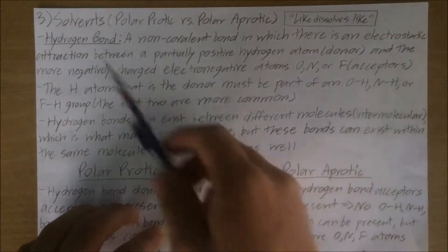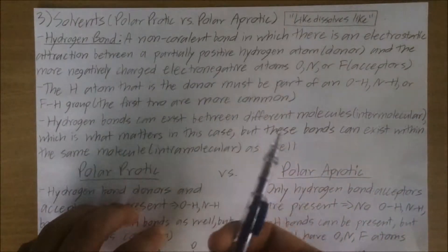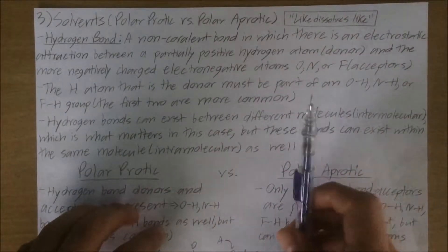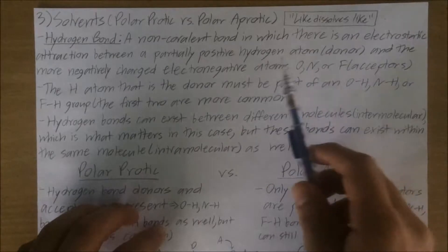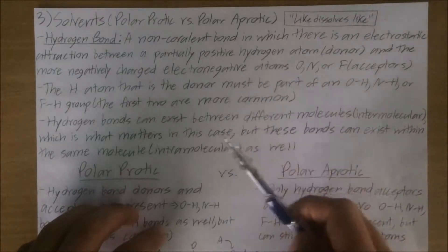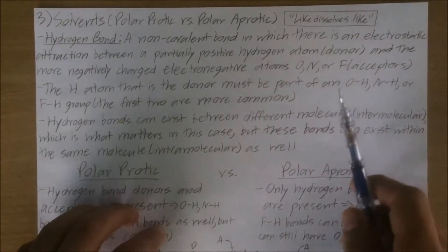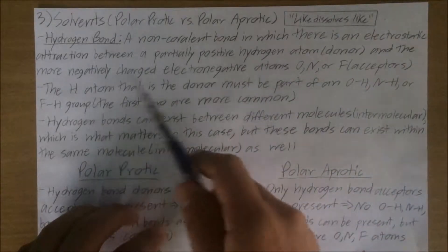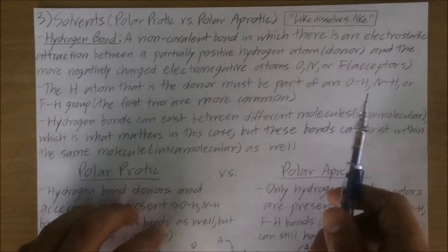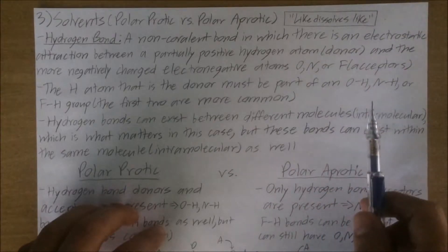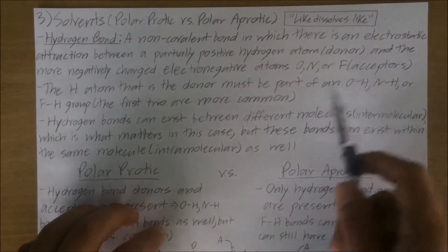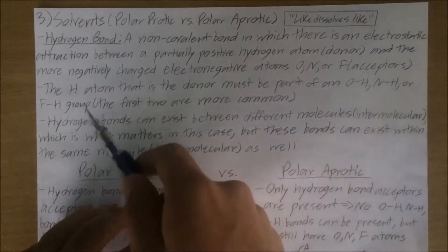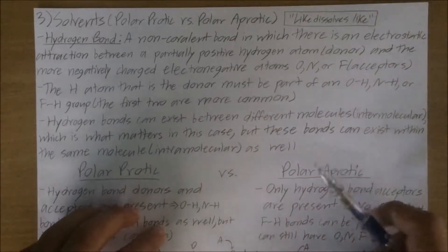Another rule to take into account for hydrogen bonding is that the hydrogen bond donor, or H atom, has to be part of an OH, NH, or FH group. Keep in mind that the OH and NH groups tend to be more common in hydrogen bonds than FH.